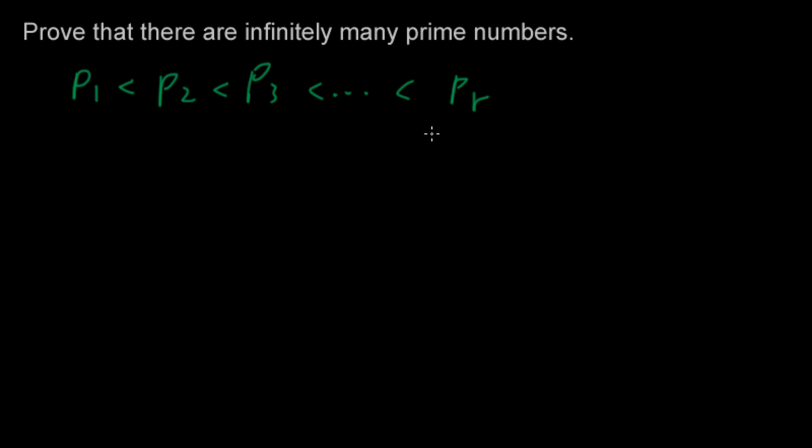Well, let's look at one special composite number. N equals P1 times P2 times P3 times everything else up to P of R. So N is a product of all the prime numbers. And every single prime number is a factor of N.